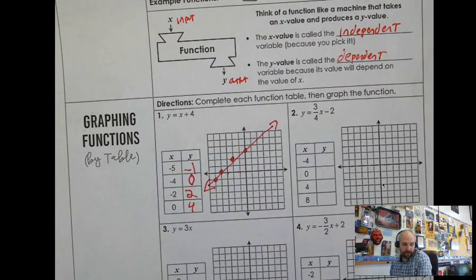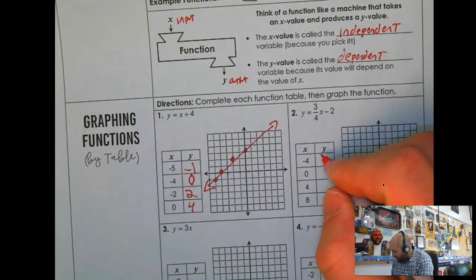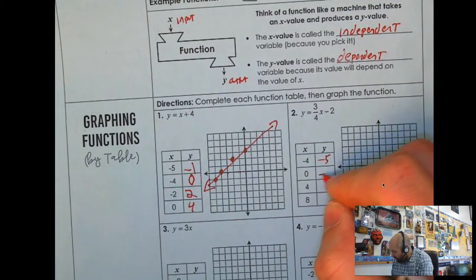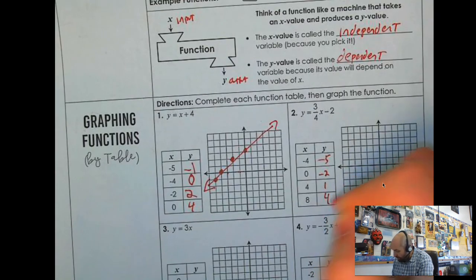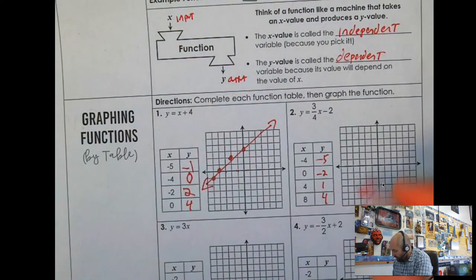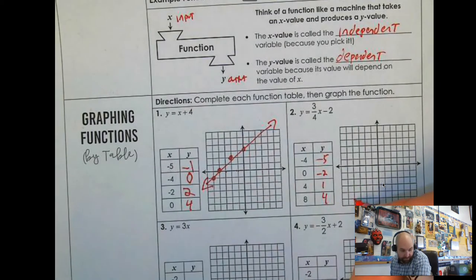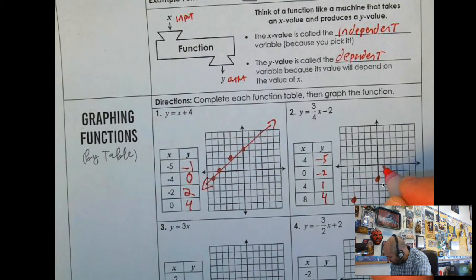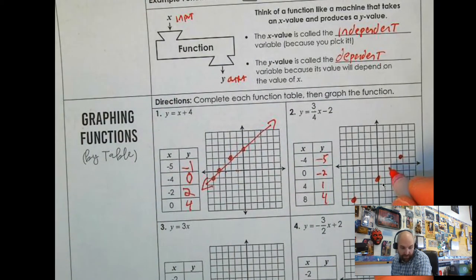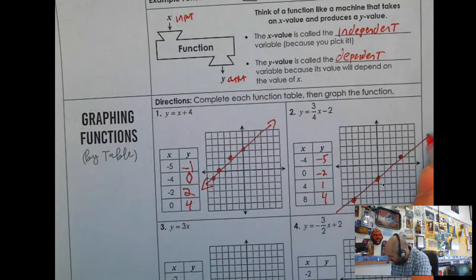Why don't you pause the video and try number 2. So for number 2 you should have gotten negative 5, negative 2, 1, and 4 in your range. And then you can plot these. So negative 4, 1, 2, 3, 4, counting 5, 1, 2, 3, 4, 5. And then 0, negative 2. 1, 2, 4, 1, 1, 2, 3, 4, up 1. And then 8, 4, you don't have 8, 4 but you can connect these points.